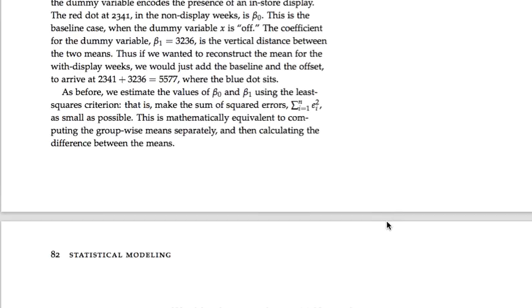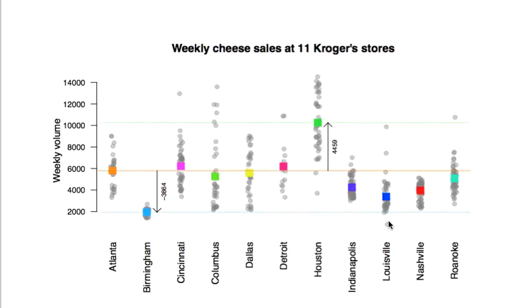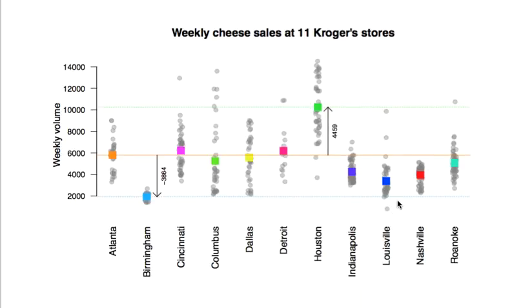This also works when a grouping variable has more than two levels, which is where dummy variables really come into their own. Here we're looking at the same dataset but a different slice: only the weeks with an in-store display ad, across 11 different Kroger stores in 11 cities — Atlanta, Houston, Louisville, etc. We can still think about group means in baseline-offset form. In this picture we've chosen Atlanta as the baseline, with its group mean drawn as a straight line across the plot.